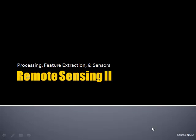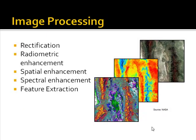This is Jaleth O'Neill Dunn with the University of Vermont, and this presentation is the second in a two-part series on remote sensing. Image processing entails a whole set of procedures. From a GIS standpoint, I'm going to cover a few of the key ones, including rectification, radiometric enhancement, spatial enhancement, spectral enhancement, and feature extraction.